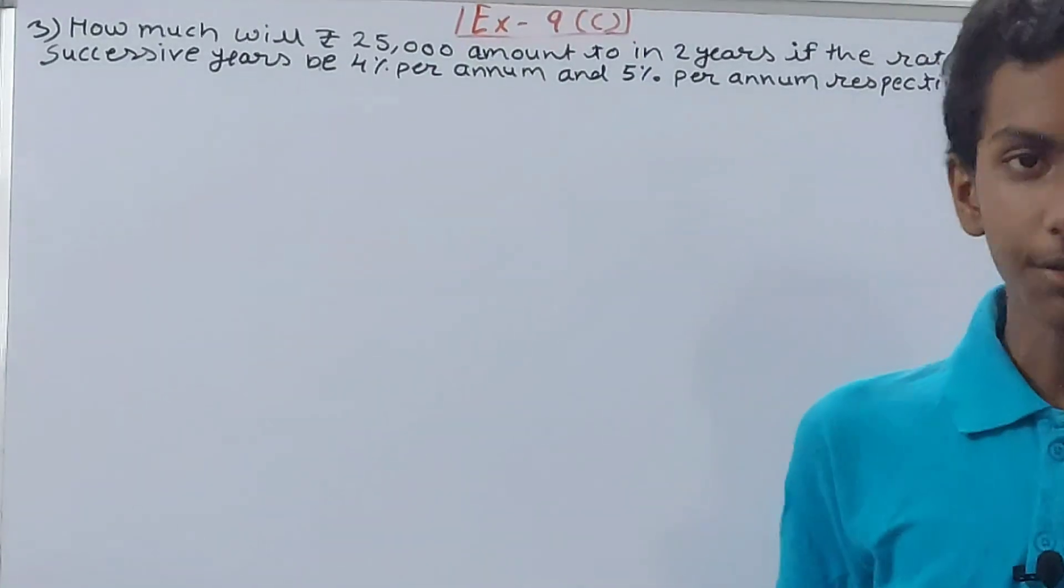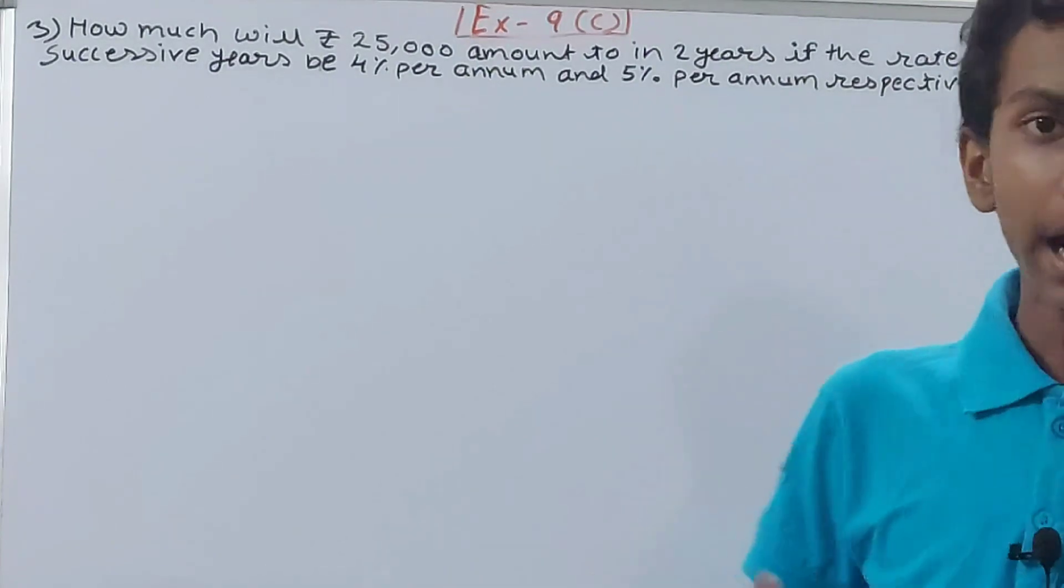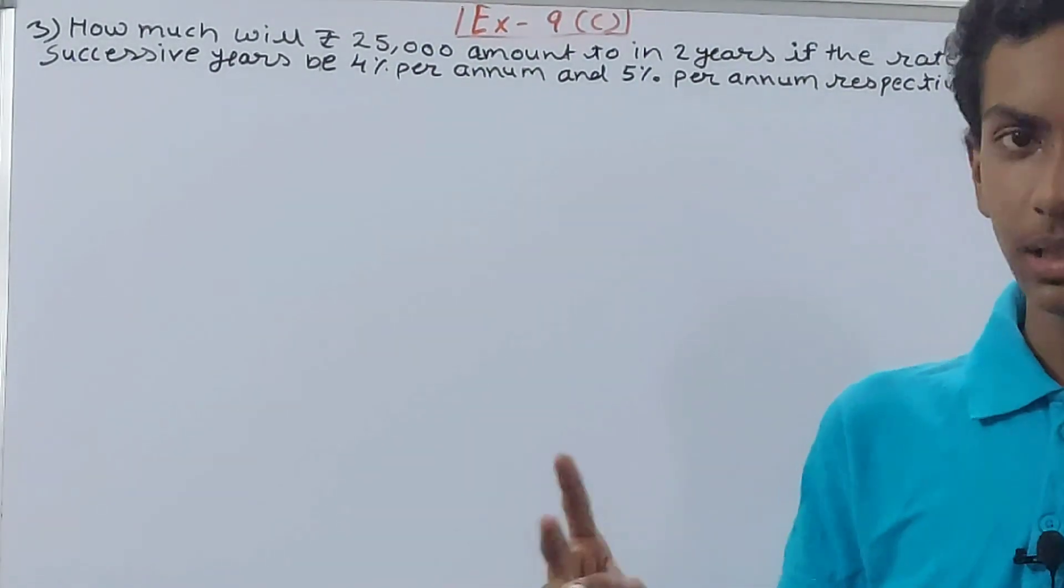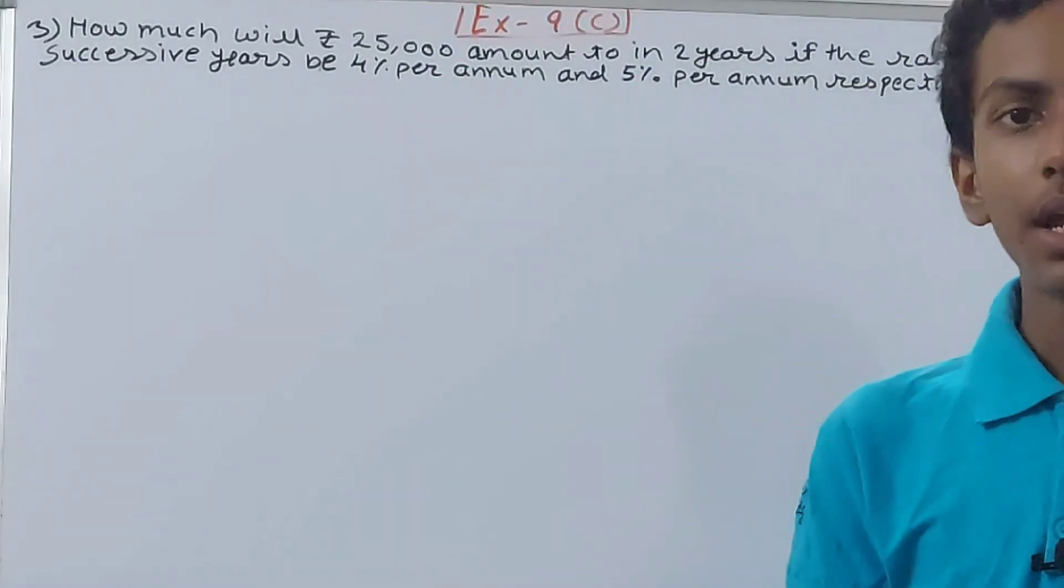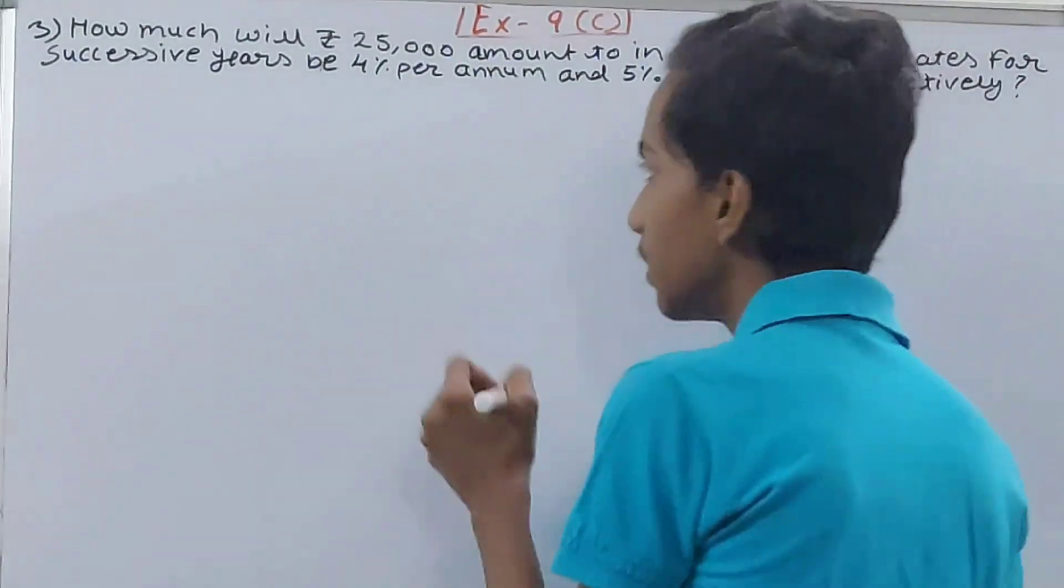year is also different. Then what will be the compound interest? Because our sum is Rs. 25,000 and it is compounded annually. For the first year it is 4% per annum, and for the second year it is 5% per annum. So what will be the amount? Very simple, just see this